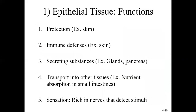Now that we've had a brief introduction to histology and the different tissue types, let's focus on the first main type in detail: epithelial tissue. There are five main functions. Number one is protection — for example, your skin, the epidermis, is made of epithelial tissue and provides your body with a layer of protection. Number two, you also have some immunity because of your skin, providing innate immunity you're born with to protect against invading microorganisms.